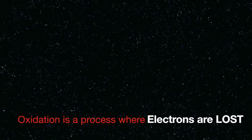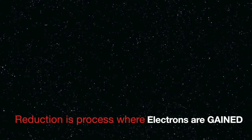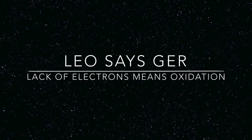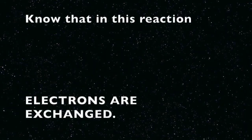Oxidation is a process where electrons are lost — oxidation number increases. Reduction is a process where electrons are gained — oxidation number decreases. LEO says GER: loss of electrons means oxidation, gain of electrons means reduction. Redox reactions — know that in this reaction, electrons are exchanged.